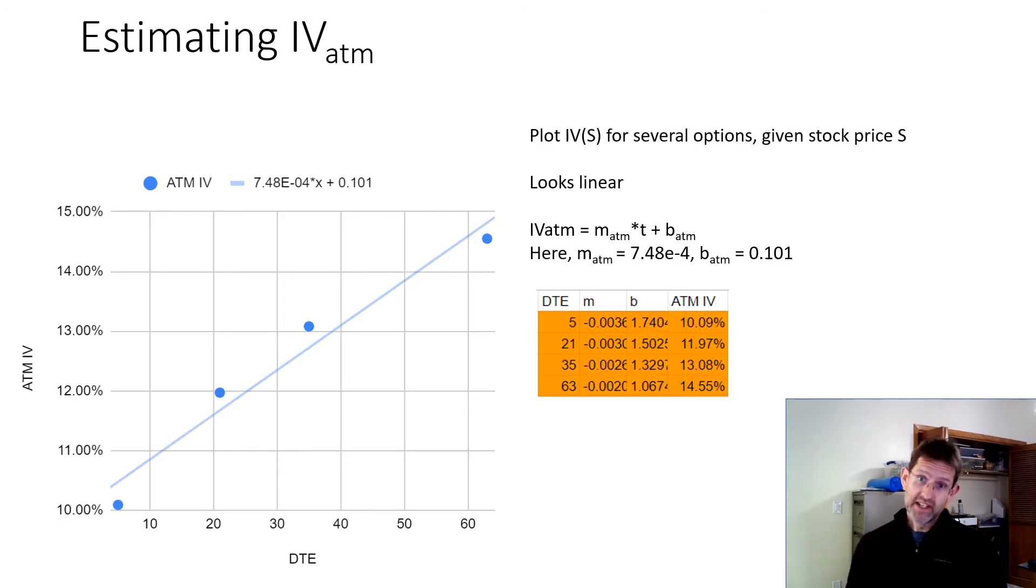So recall that I tabulated at-the-money IV for these four options that I used, that I cut and pasted from barchart.com. So I plot those at-the-money IVs here on this plot. And you see a roughly linear dependence.